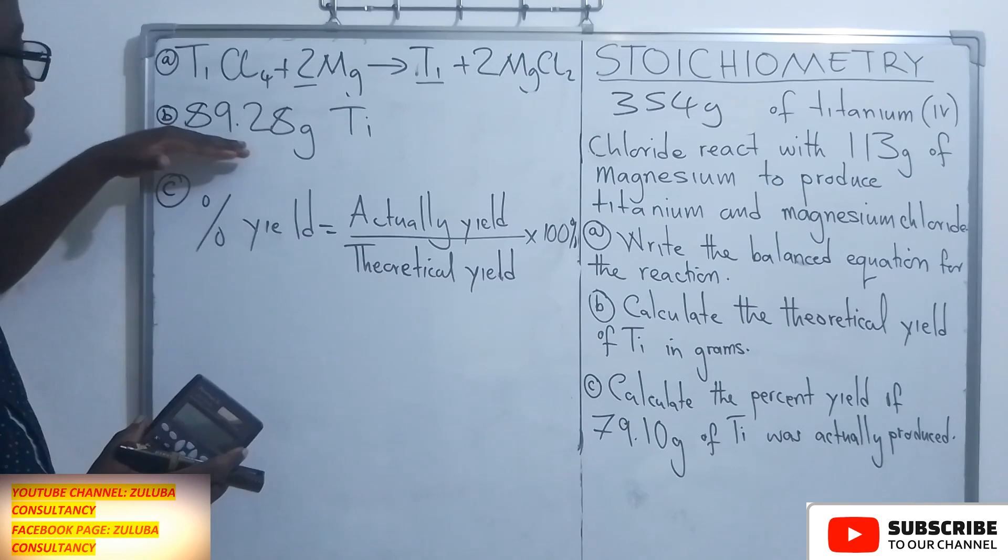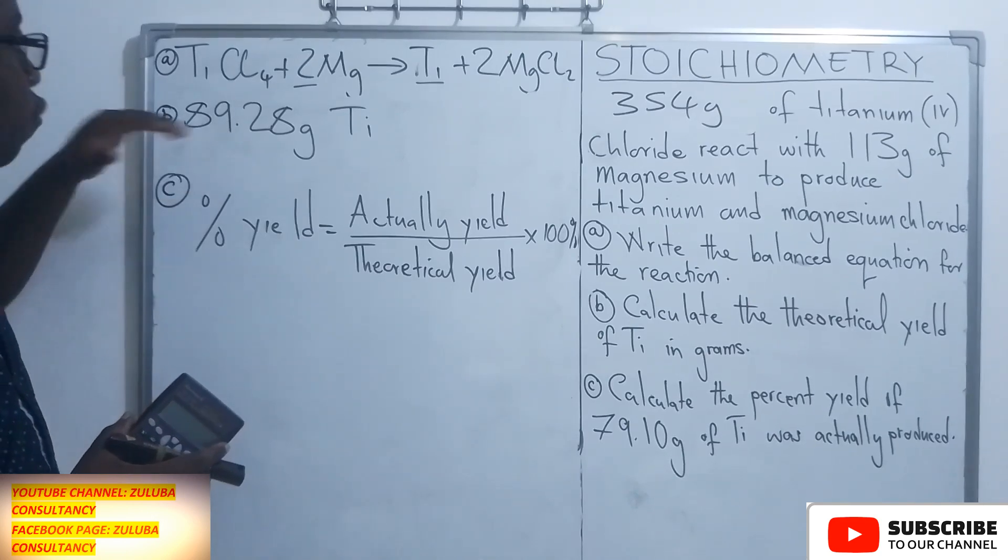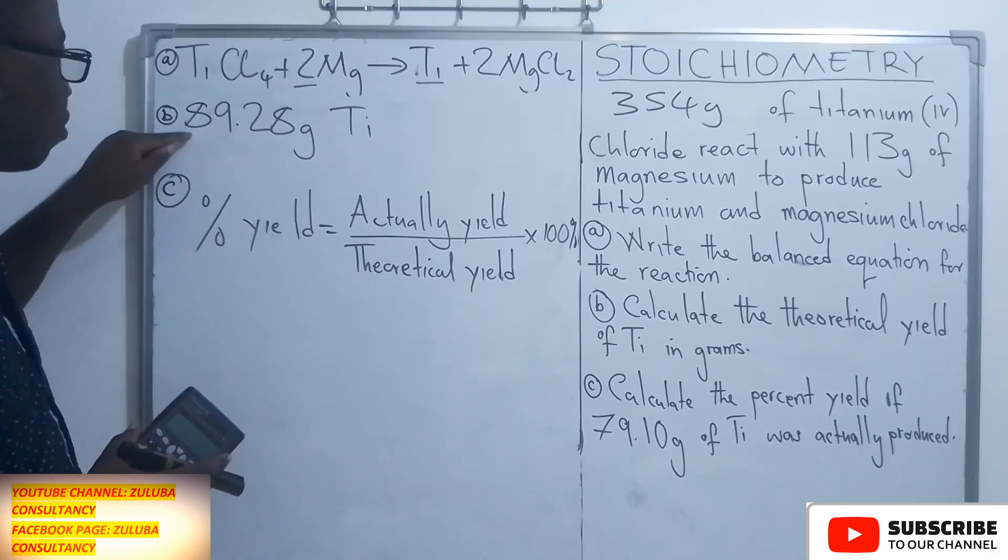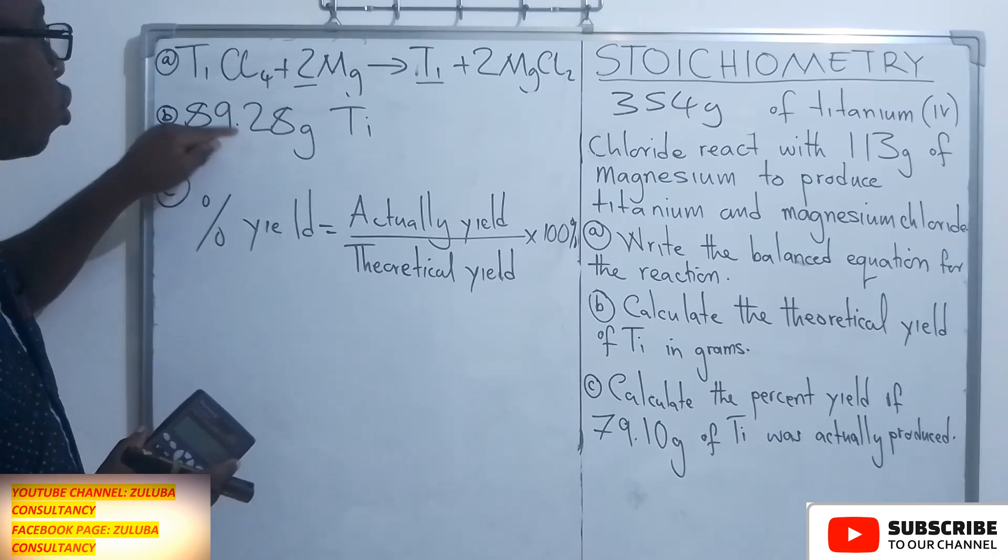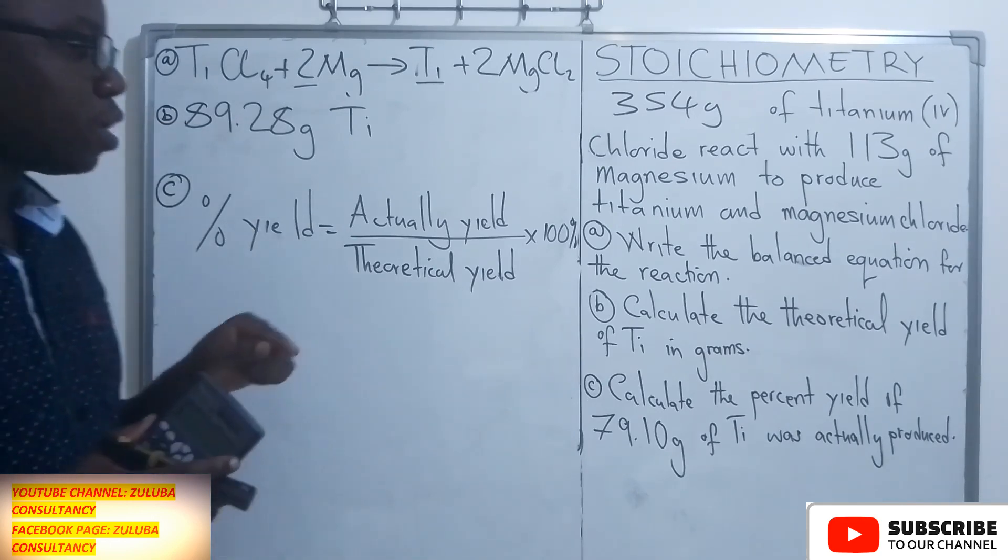And this is what we found here. That if all the limiting reagent reacts, 89.28 grams of titanium can be produced.